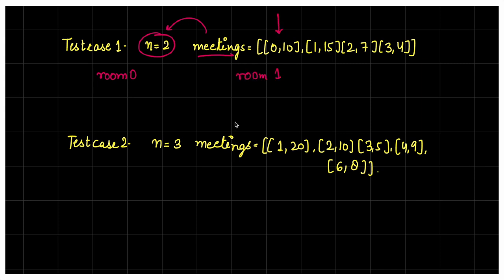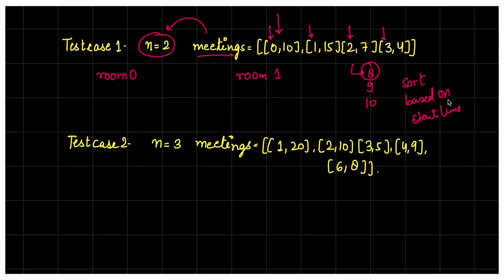Let's start with both test cases from LeetCode. Say we are given two rooms — room 0 and room 1. Whenever we want to schedule meetings, we will schedule according to the earlier start time. Agar koi meeting 8 baje schedule honi hai, ya 9 baje, ya 10 baje, toh obviously we will start scheduling from 8. That means we need an order of start times — lowest start time should always be scheduled first. So we must sort our array based on start time.